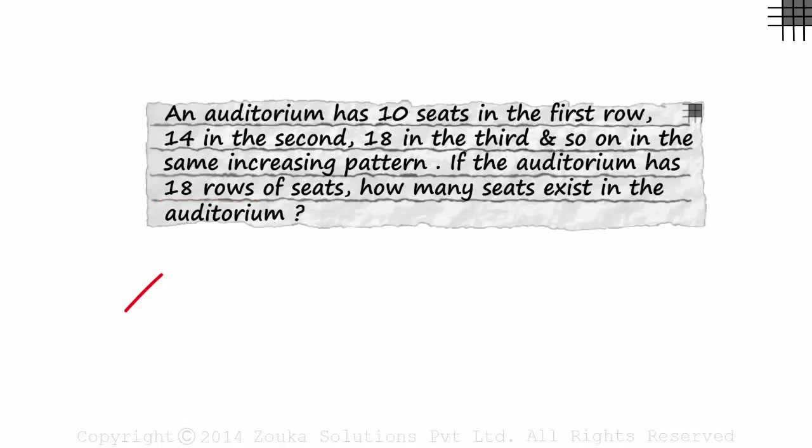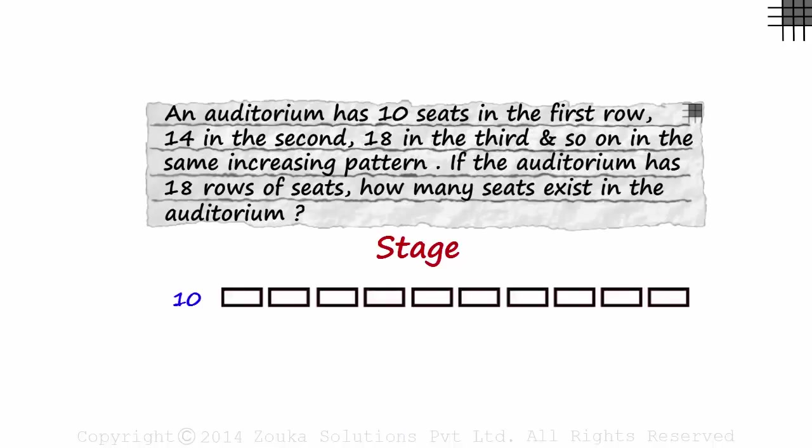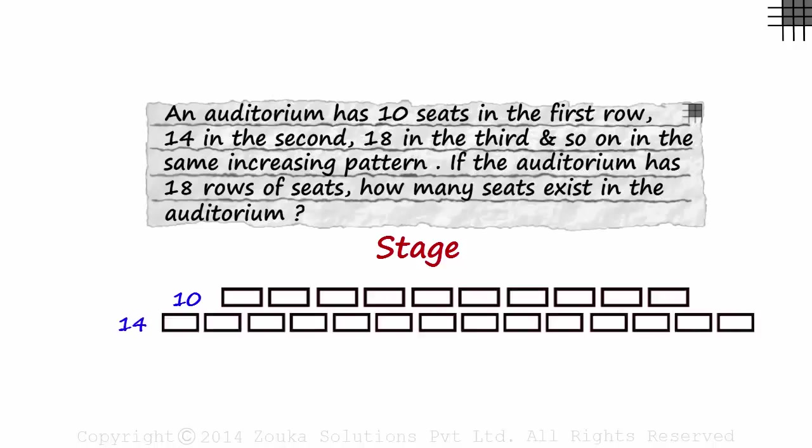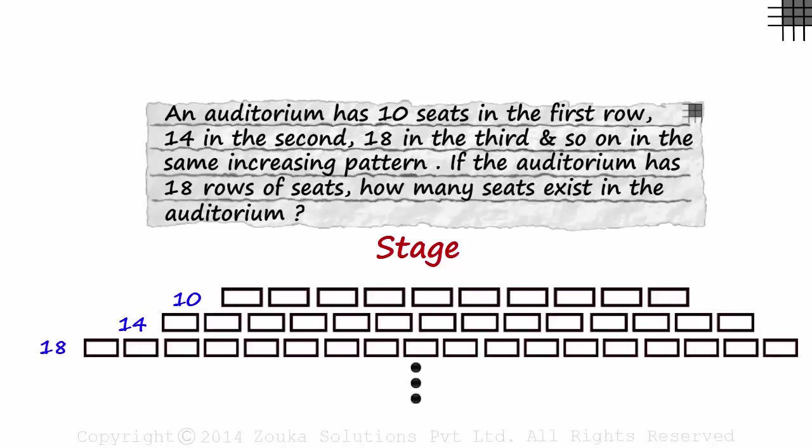If you don't understand the problem at first sight, try drawing a rough sketch. If this is the stage, they have told us that the first row has 10 seats, the second has 14, the third has 18 and so on. And there are 18 rows in all.